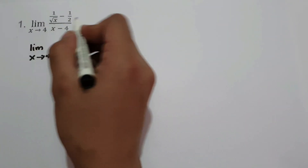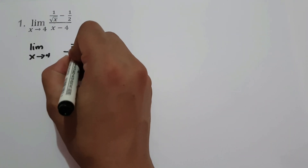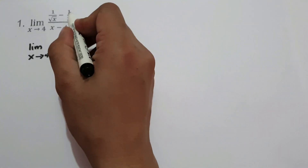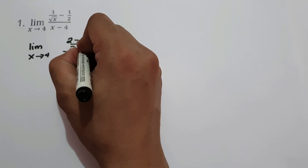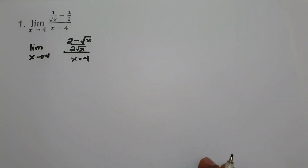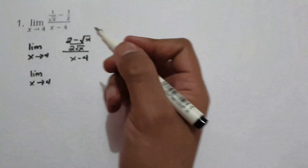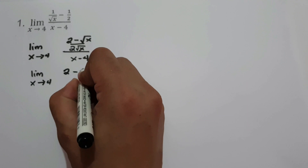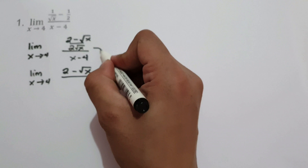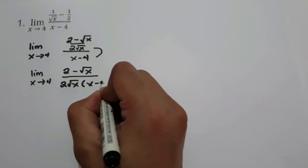Let's have limit as x approaches 4. Let us simplify the numerator by finding the LCM of 2 and square root of x, and that will be 2 square root of x. Let's multiply 2 times 1, that is 2, and then negative 1 times square root of x, that is negative square root of x. Let us rewrite x minus 4. We have limit as x approaches 4, rewriting 2 minus square root of x all over 2 square root of x multiplied by x minus 4.